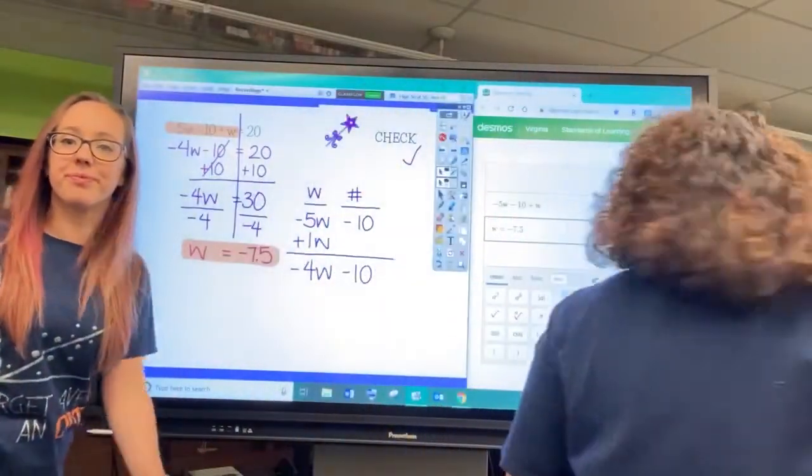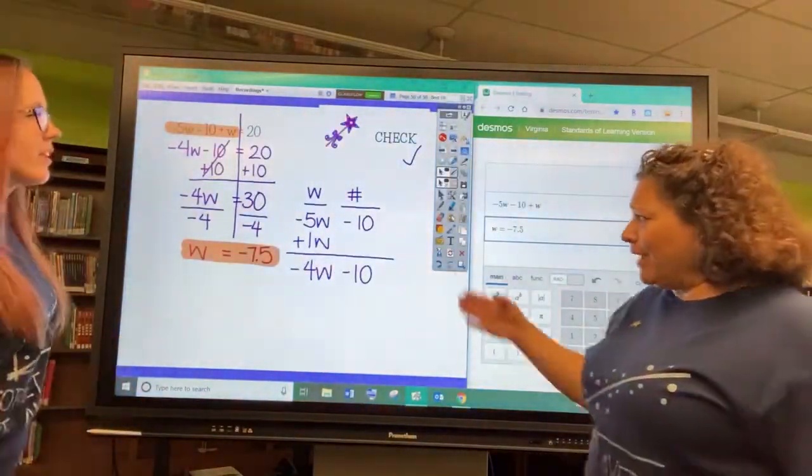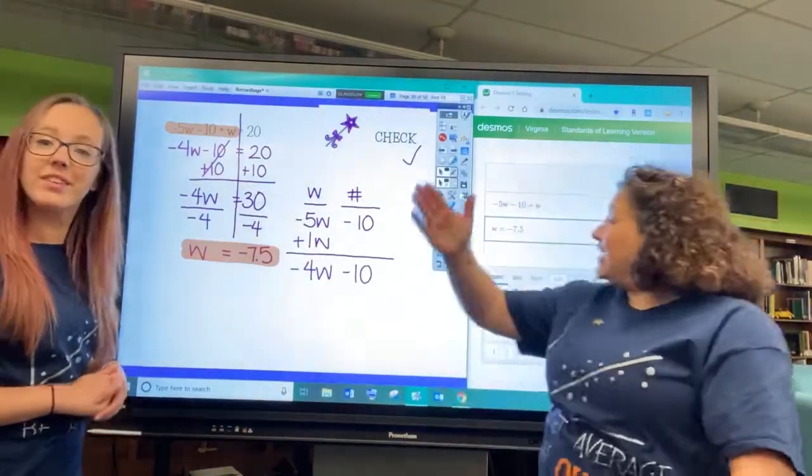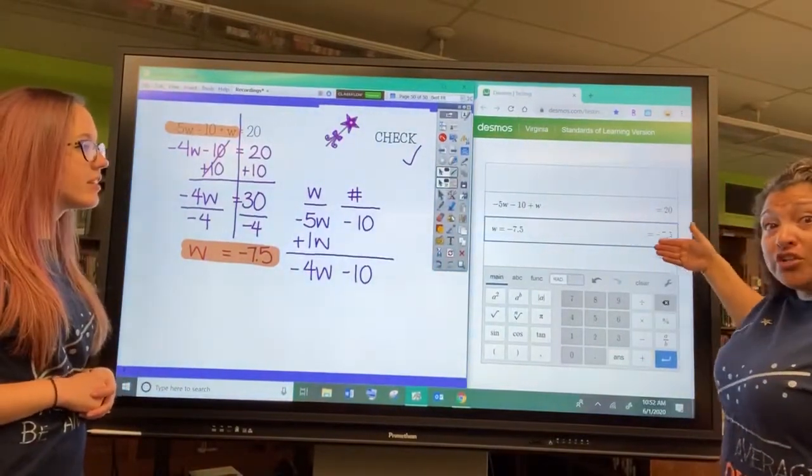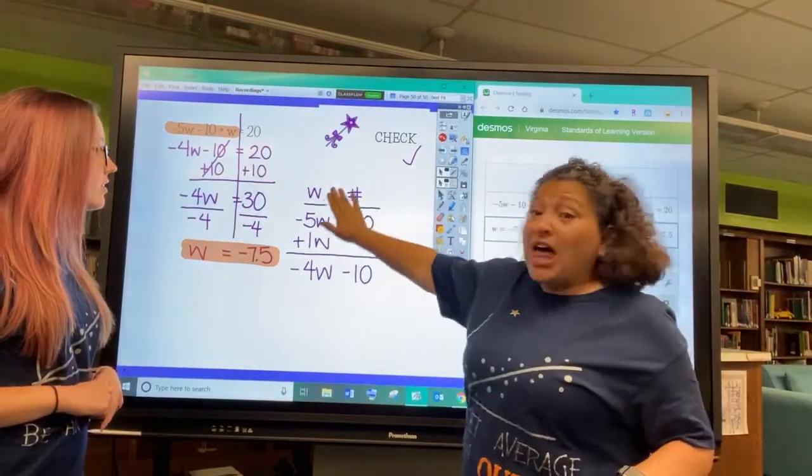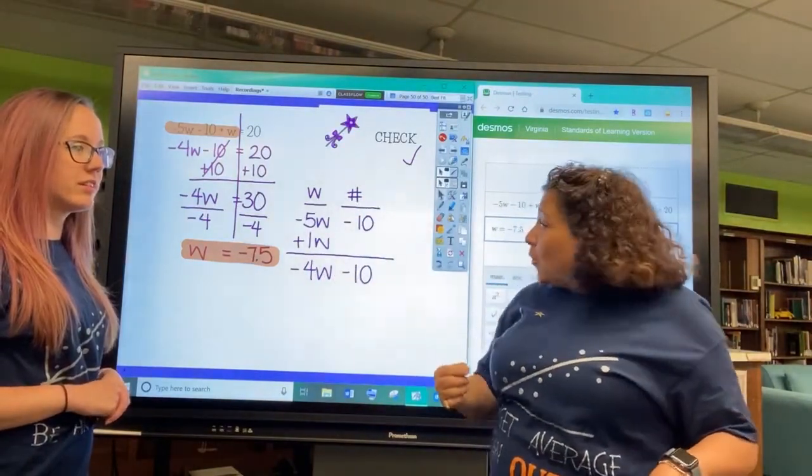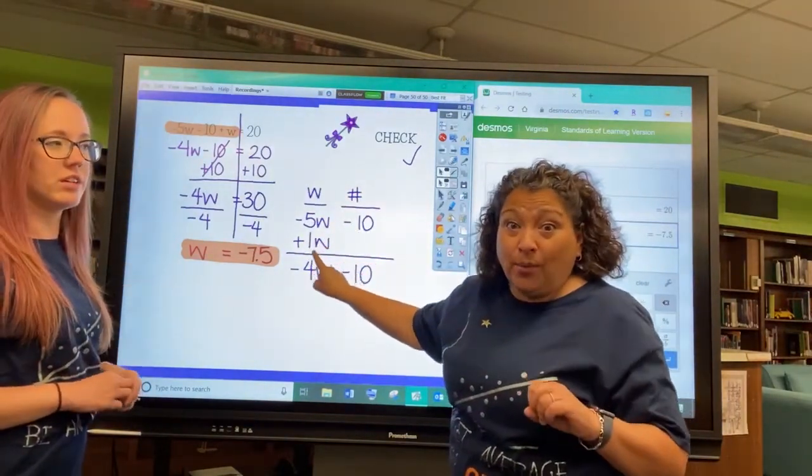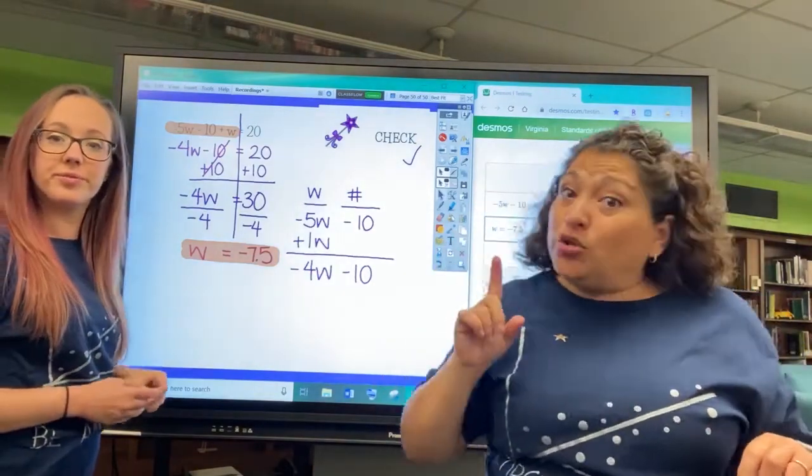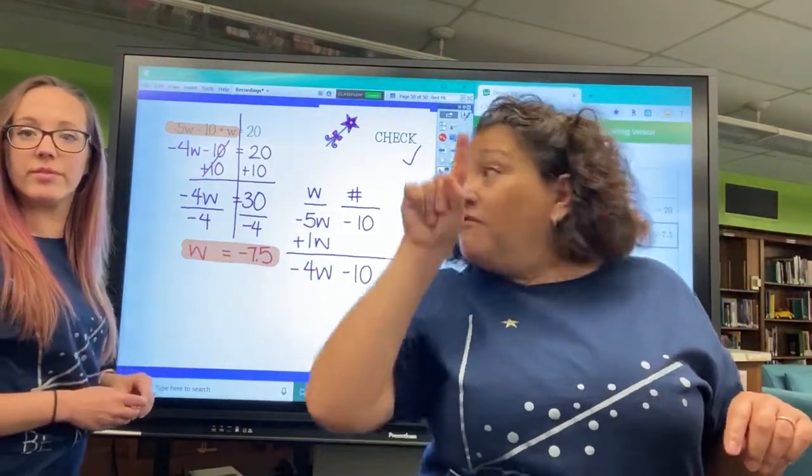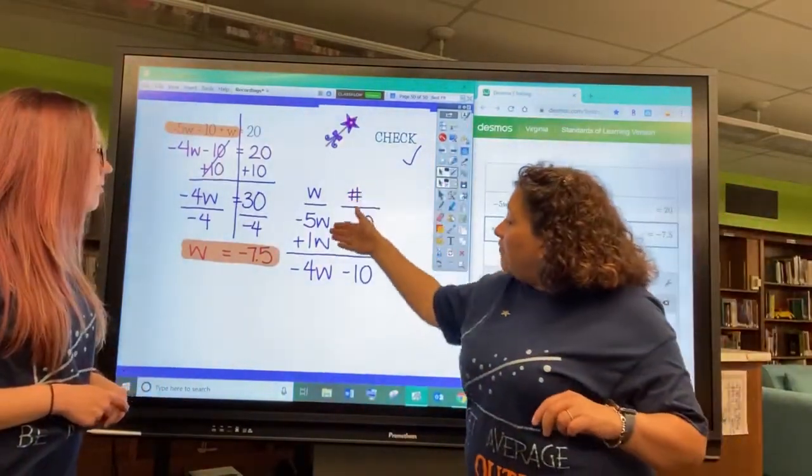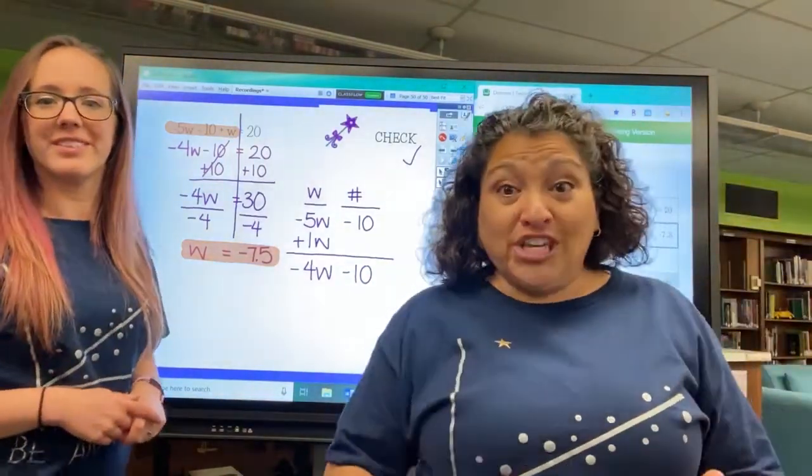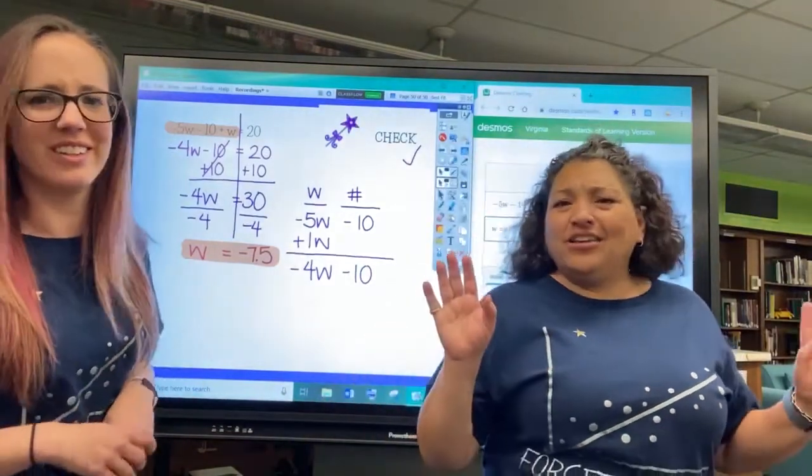We're back with your answer. Did you get W equals negative 7.5? If you did, fantastic. And make sure you check it and it works. If you didn't, go back to combining your like terms and make sure you did that correctly. Because we had a negative 5W and a positive 1W. When there is nothing in front of a variable, you have to assume there's an invisible 1 there. So negative 5 plus 1 is negative 4W minus 10, and you go from there.